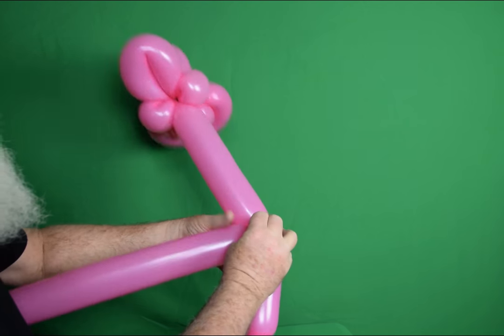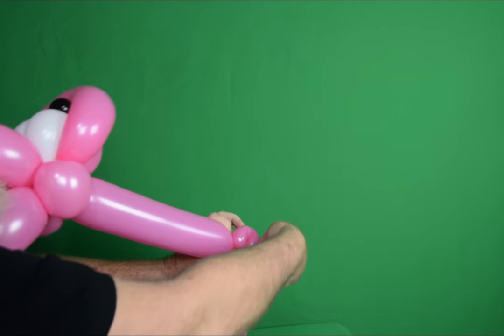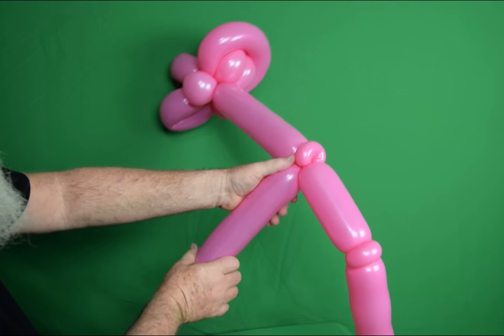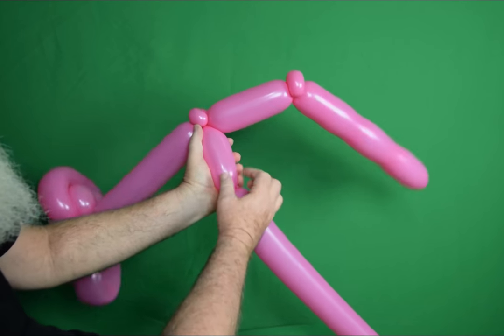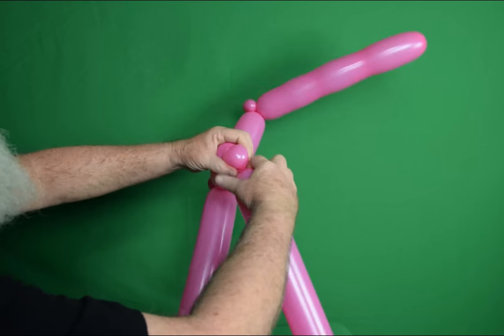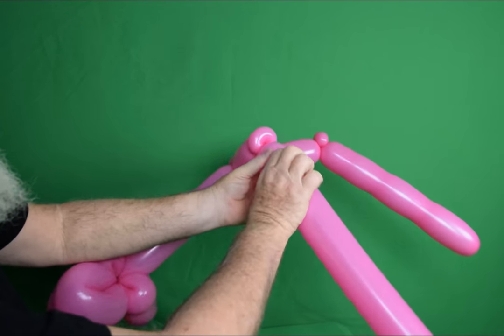I'm going to twist the end of it into that first pinch twist there. Then you're going to make about a hand and a thumb. Then I'm going to make a pinch twist. And just a round little bubble there.